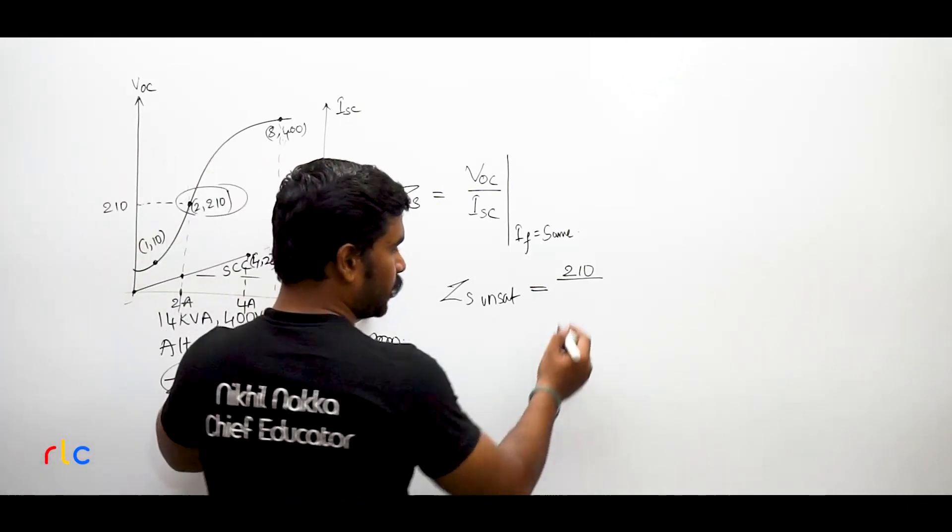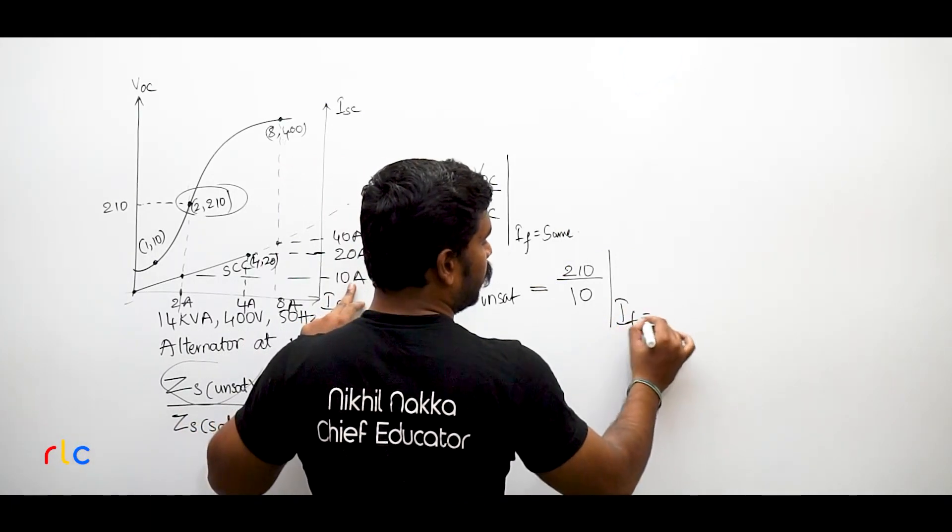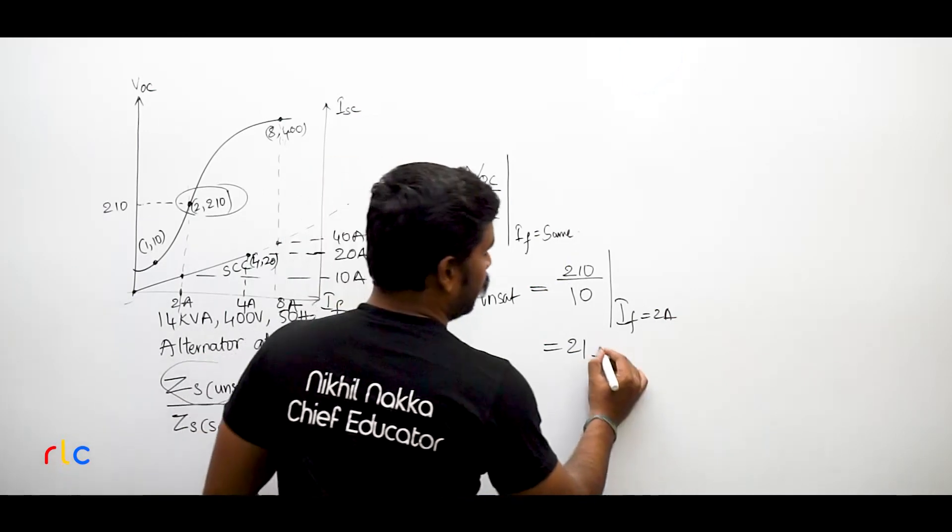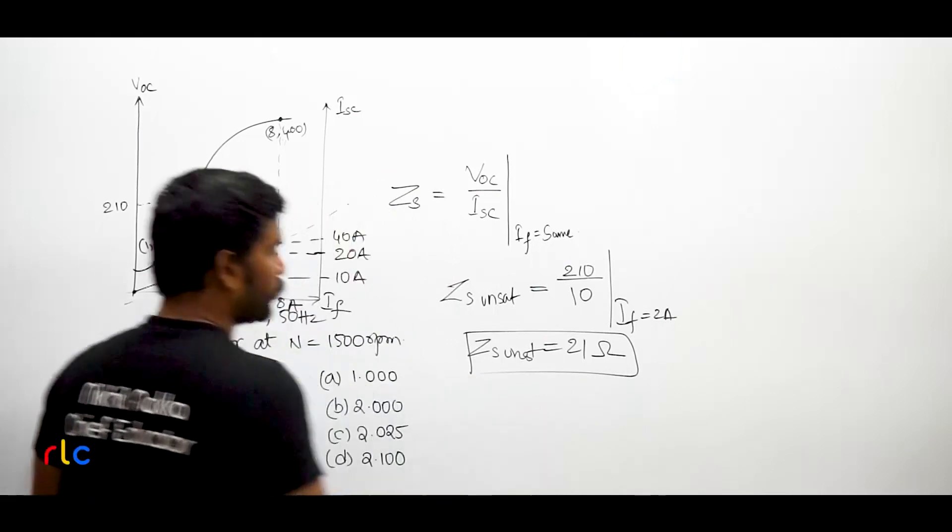So what is VOC at 2 Amperes of field current? 210. Now what would be the current, short circuit current at 2 Amperes of field current? 10 at IF is equal to 2 Amperes. Now what is the Zs at unsaturated impedance? 21 Ohms. So I got Zs unsaturated is equal to how much? 21 Ohms.